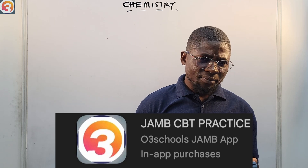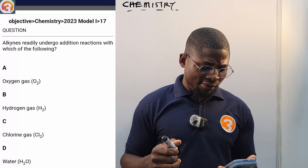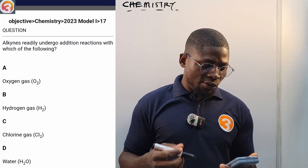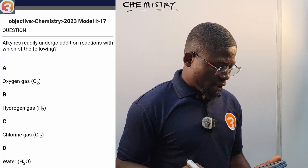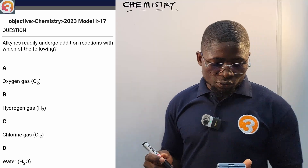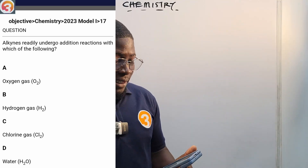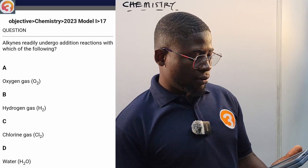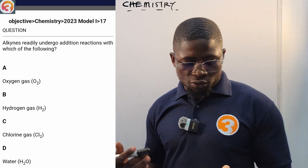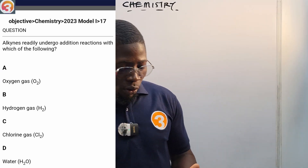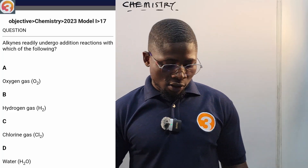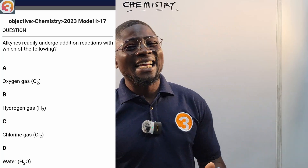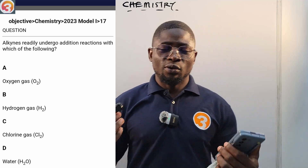This is a 2023 question, number 17, displayed on your screen. It says: 'Alkynes readily undergo addition reactions with which of the following?' A) oxygen gas O₂, B) hydrogen gas H₂, C) chlorine gas Cl₂, D) water H₂O. We're going to come back to this question at the end of the class after we have seen the reactions that alkynes undergo.